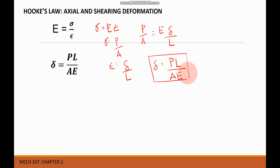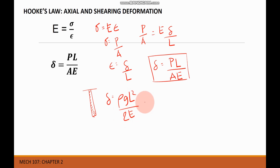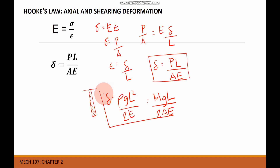For a material suspended vertically, there is also elongation due to its own weight. The deformation equals the density multiplied by gravity multiplied by the square of the length, divided by twice the modulus of elasticity. Alternatively, it equals mass times gravity times original length, divided by twice the area times the modulus of elasticity. This applies only to vertically suspended materials.